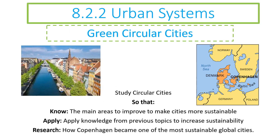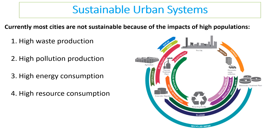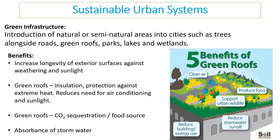How can we make our cities greener? Currently cities are not sustainable because of high populations, leading to high waste, high pollution, high energy consumption, and high resource consumption. What we want is greener infrastructure - introducing natural and semi-natural areas into cities, such as trees along roads, green roofs, parks, lakes and wetlands. Green roofs increase the longevity of exterior surfaces, provide insulation and protection against extreme heat, reduce the need for air conditioning, absorb carbon dioxide, and can even be used to grow food. Water can be absorbed from storms, meaning less goes into the drains and there is less surface runoff and therefore less flooding in cities.